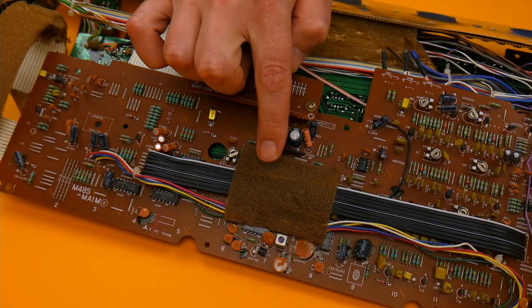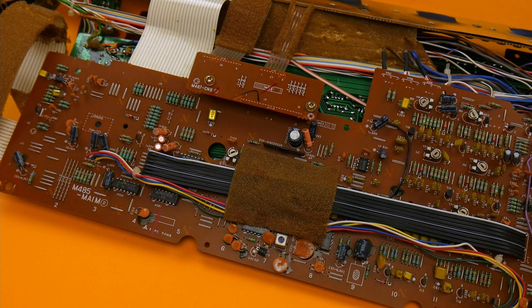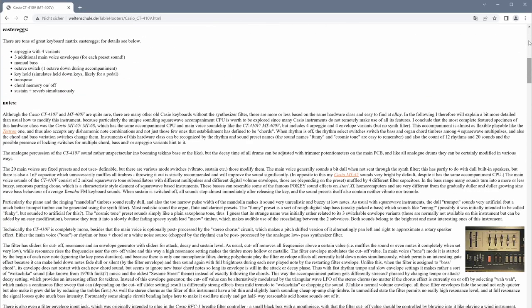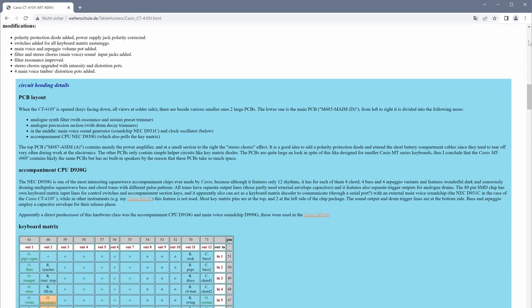Under this piece of foam is the NEC D931 sound chip for the main voice. If you like to modify your CT410V, I recommend to have a look at the Table Hooter website. There you can find detailed information about all possible modifications. I put a link in the description.